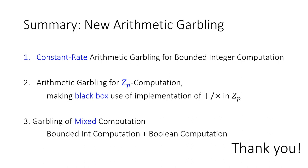Question: You mentioned doing the information-theoretic scheme for log-depth pieces of the circuit. How do you choose how big a piece to use — is there an efficiency trade-off or optimal way to set it? Answer: In the paper, we do it after every multiplication as well as addition, because the label dimension is also linear in the fan-in. Even after an addition gate, dimension can grow arbitrarily large if you have large fan-in, so we always do it after every gate. Maybe there is an optimal way to set it if you know the fan-in.